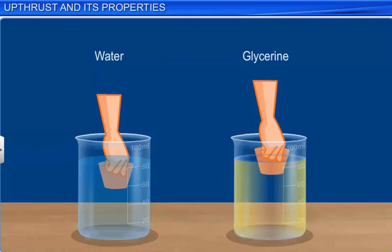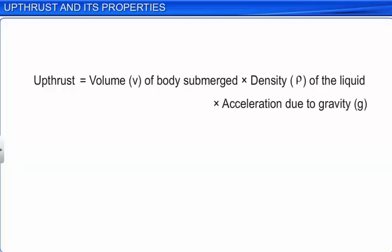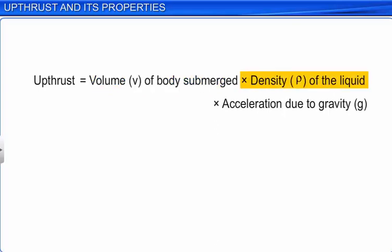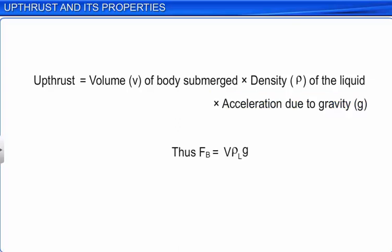The upthrust due to a liquid on a body depends on the volume of the body and the density of the liquid. The upthrust is equal to the product of the volume V of the body submerged in the liquid, the density rho (ρ) of the liquid, and the acceleration due to gravity g. Thus, FB = V · ρL · g.